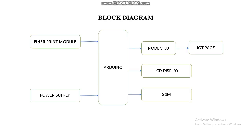This is the block diagram. The fingerprint module is integrated with Arduino. When a fingerprint is scanned, it will be matched. If matched, the LCD display will show a message indicating whether the fingerprint matched or not. If it is matched, the GSM module will send a message to the student's parents. Additionally, via the IoT page, we can update which student is present at that time.